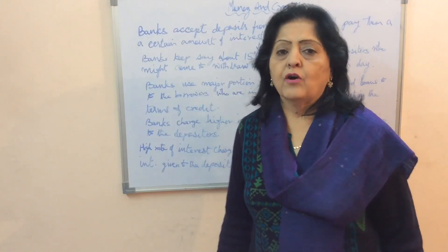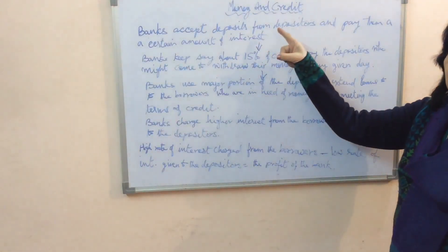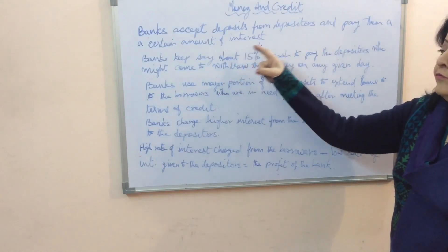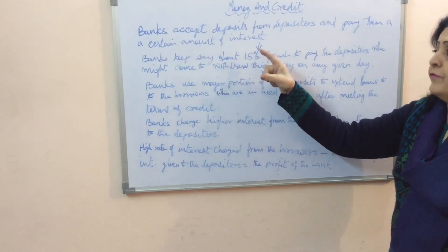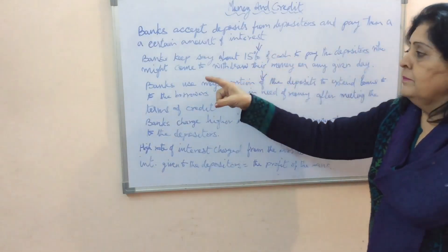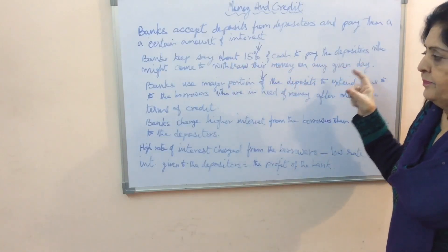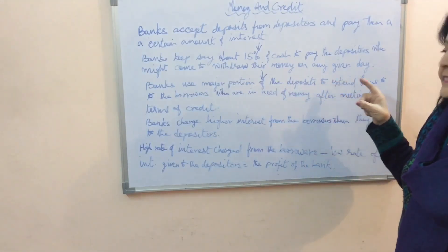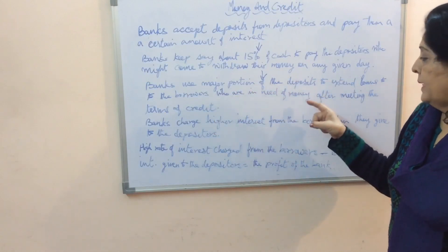Let us now understand the working of banks. Banks accept deposits from depositors and pay them a certain amount of interest. Banks keep about 15% of cash to pay depositors who might come to withdraw their money on any given day.